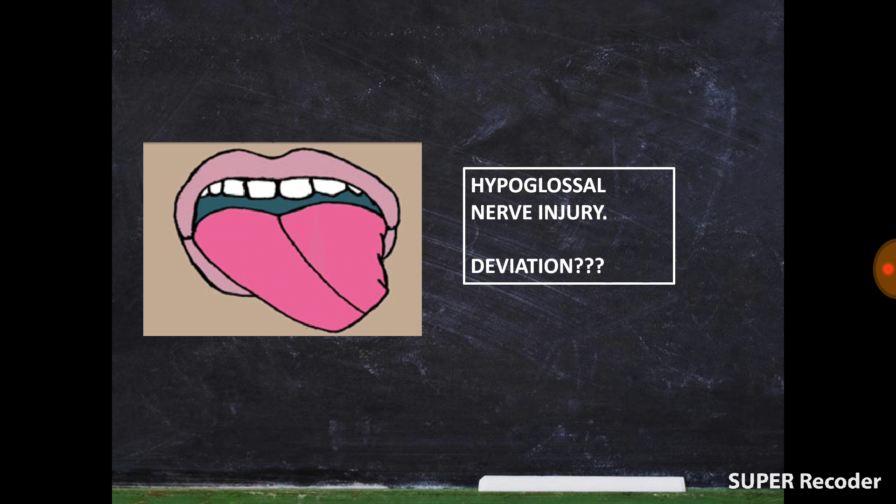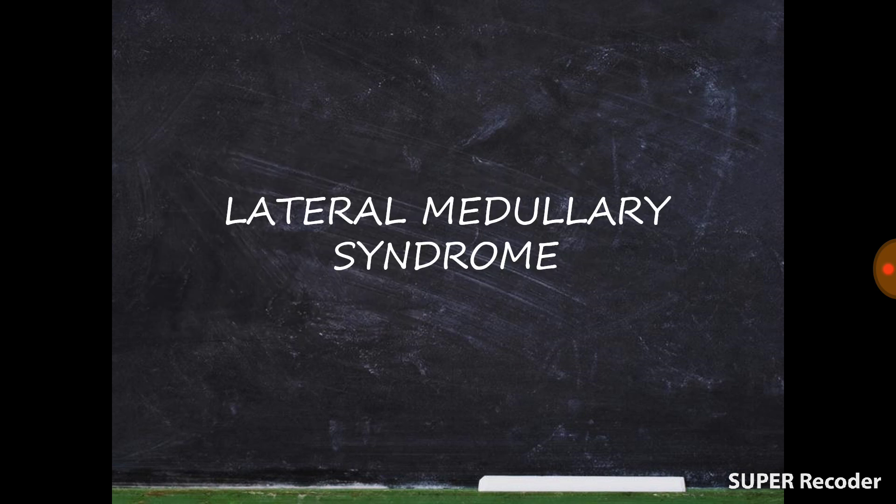The last structure involved in medial medullary syndrome is the hypoglossal nerve — the 12th cranial nerve. Note that the hypoglossal nerve supplies the same side, so the deviation of the tongue when you ask the patient to protrude it will be ipsilateral — deviation toward the same side as the lesion.